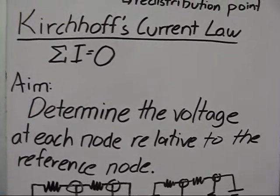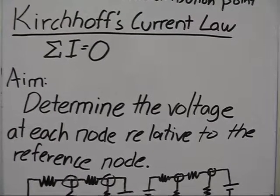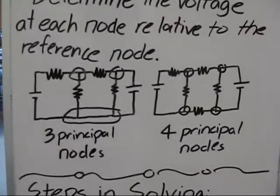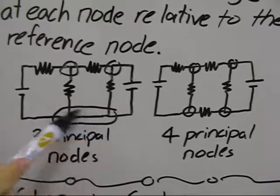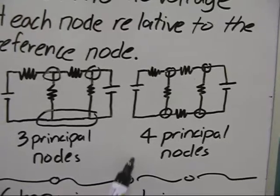The aim of nodal analysis is to determine the voltage of each node relative to the reference node. So in counting the nodes, in this example, we have one, two, three nodes in the other side, and four in the other example.